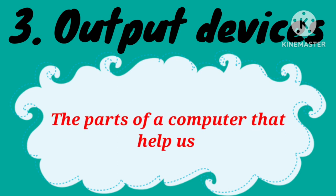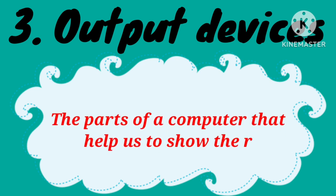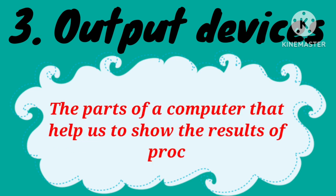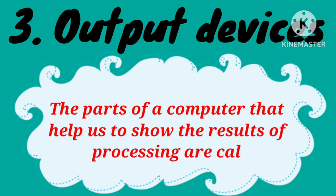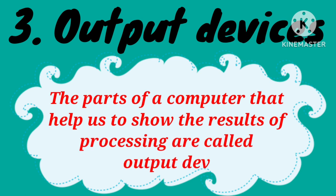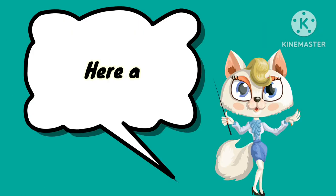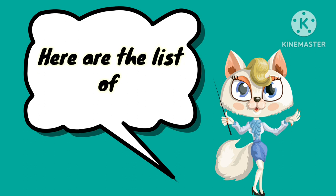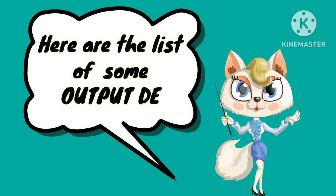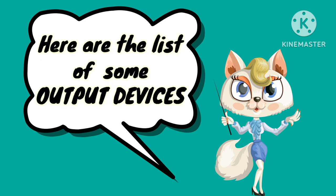Number three, output devices. The parts of a computer that help us to show the results of processing are called output devices. Here is the list of some output devices.